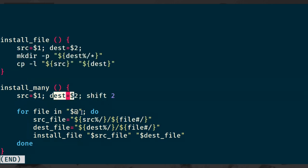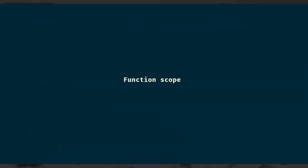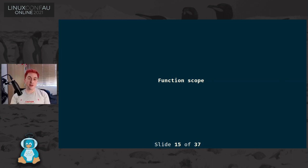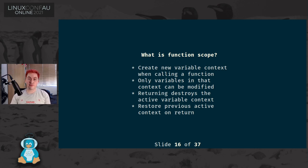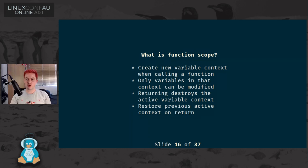The same thing is also happening with the destination variable. In order to resolve this, function scope would be quite desirable - being able to have independent calls to functions have their own copies of variables. In order to implement function scope, we need some concept of a variable context for a function. Whenever we call a function, we need to create a new variable context, ensure that only variables defined in that function can be modified within it, and then whenever we return, we destroy that context and restore whatever variable context was in whatever called us.